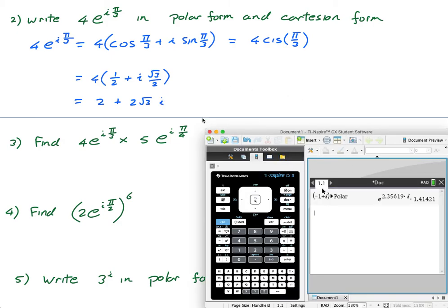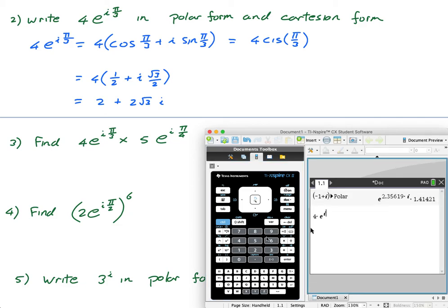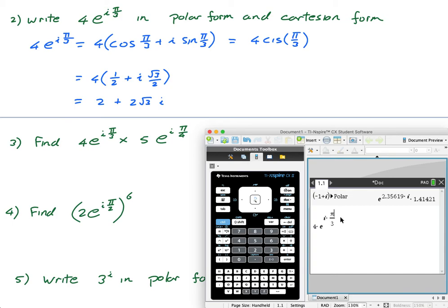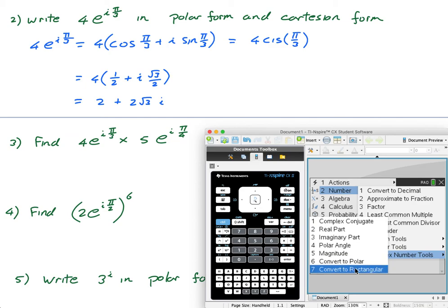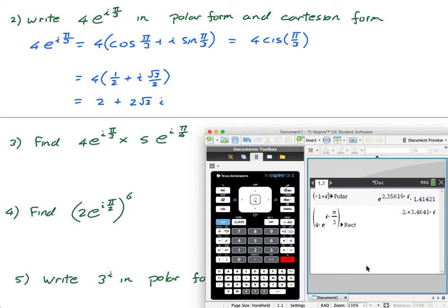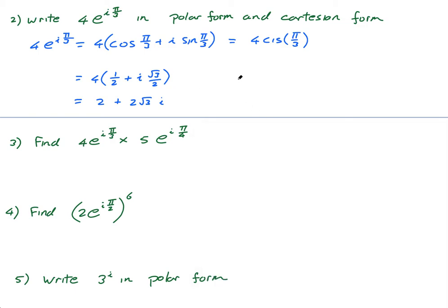Let's verify with the calculator: I enter 4 × e^(i·π/3), then Menu → Number → Complex Number Tools → Convert to Rectangular. I get 2 + 2√3·i, which is approximately 2 + 3.4641·i. That looks right.